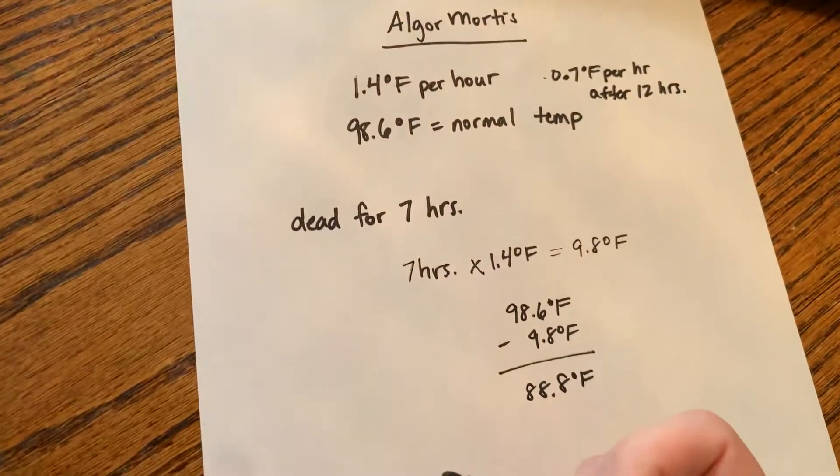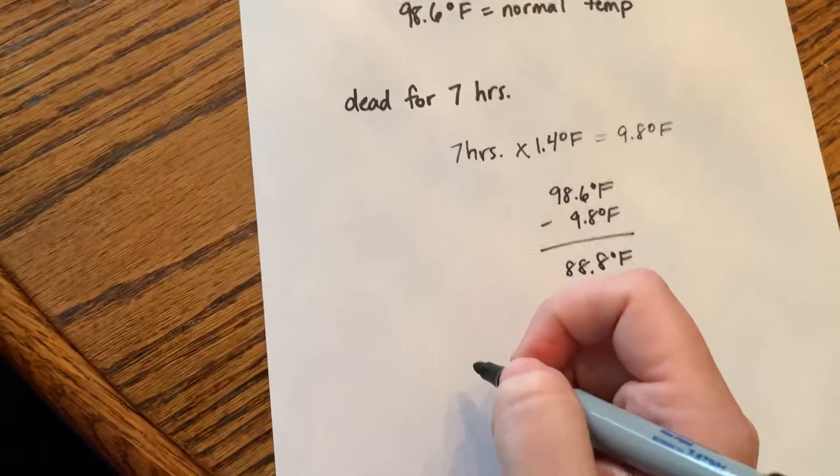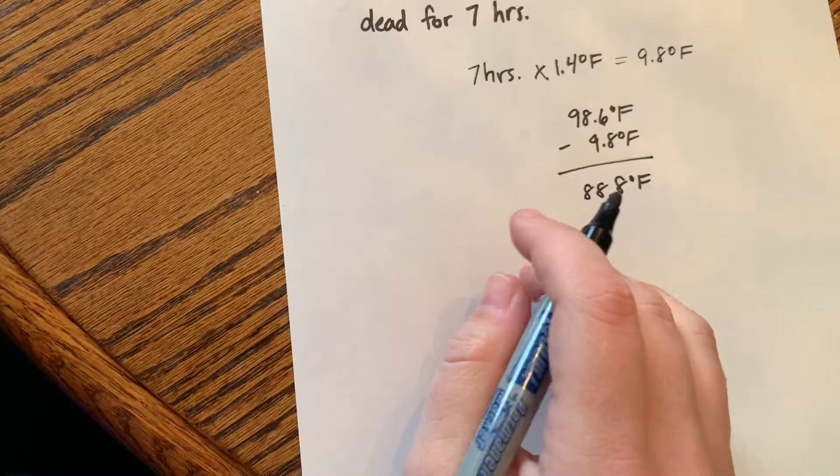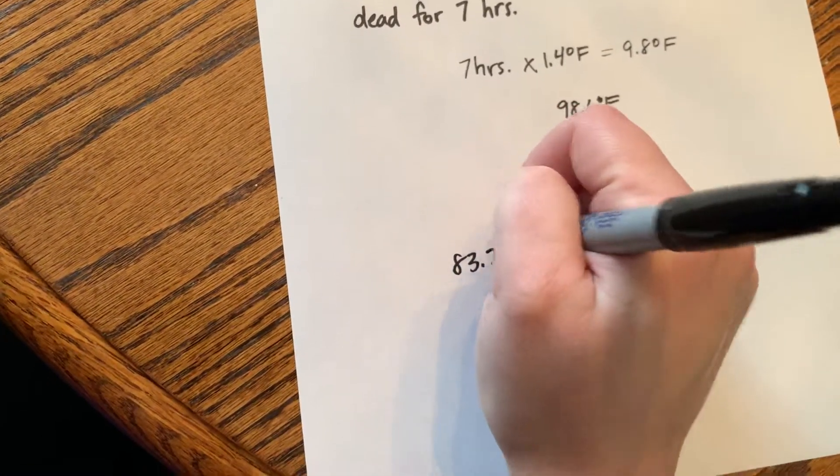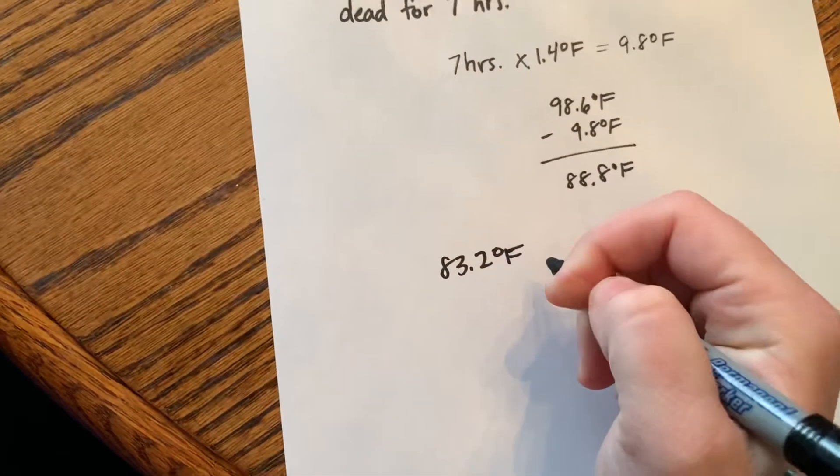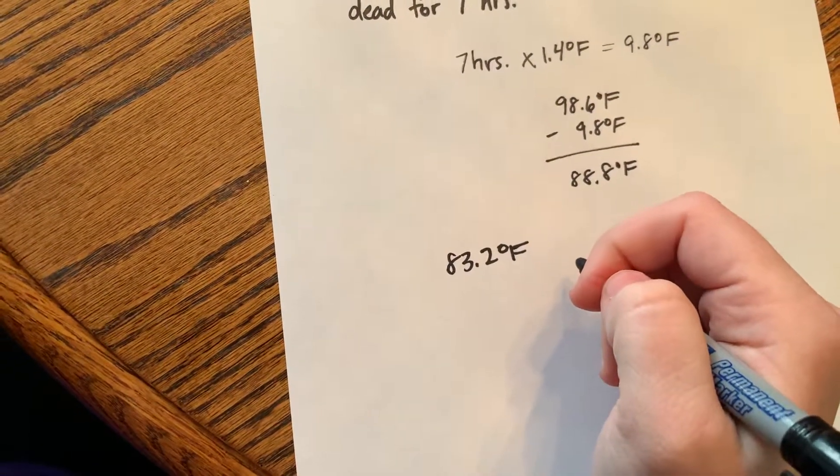But we'll just leave it at the general rate for this video. So let's say a person is found with the body temperature of 83.2 degrees Fahrenheit. We can also calculate how long they've been dead.